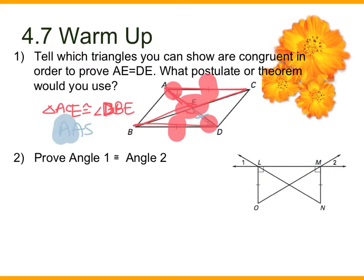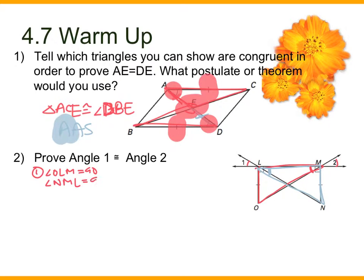Number two says prove that the measure of angle one equals the measure of angle two. If you could look at this as two separate triangles — if I prove those triangles are congruent, then part of those triangles — the vertical angles — are the ones I'm trying to prove are congruent. The only thing I'm given are the right angles. So I get angle OLM — I can say it equals 90 degrees and angle NML equals 90 degrees, or I could say they're perpendicular.